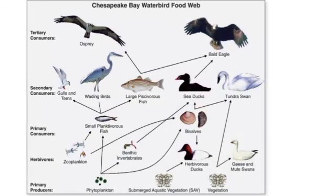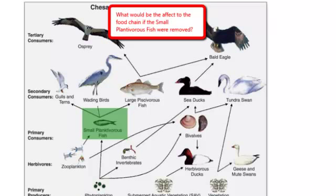We're going to look at the Chesapeake Bay Waterbird Food Web. More specifically, we're going to ask the question: what would happen if we were to remove the small planktivorous fish? As you see, the small planktivorous fish is a main food source for three other secondary consumer organisms, one of which is a main food source for the osprey as well as the bald eagle.